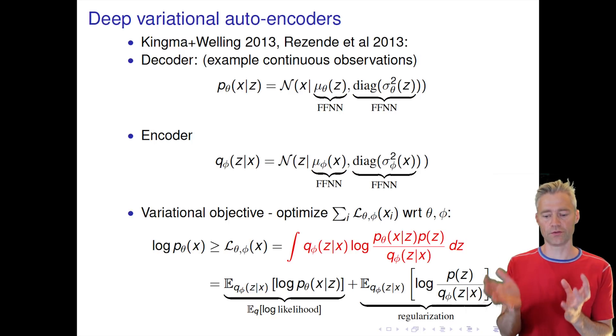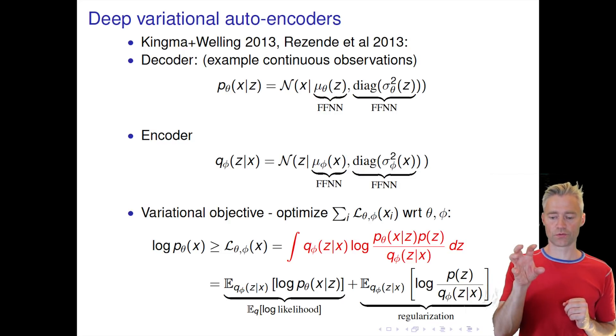But then we also have a second term which is a regularization term. You can see it has the log of the prior distribution over the latent space divided by the variational posterior distribution.